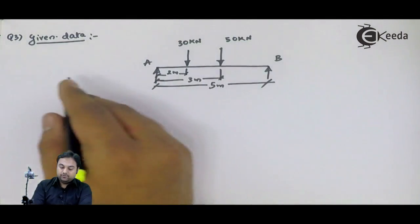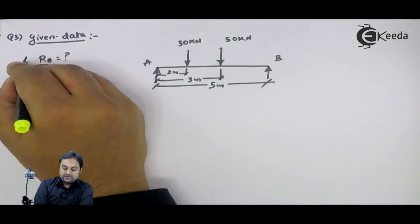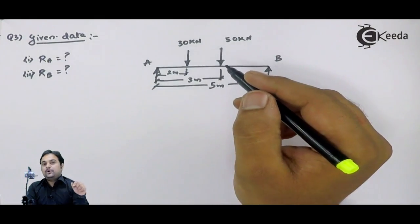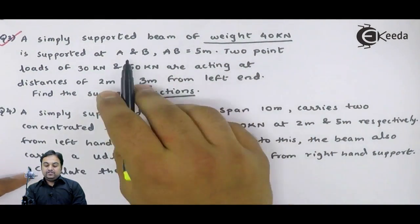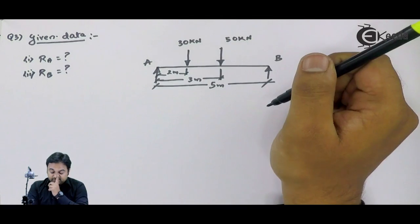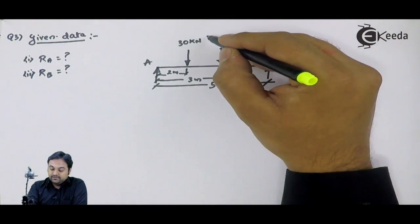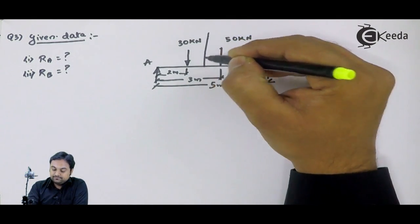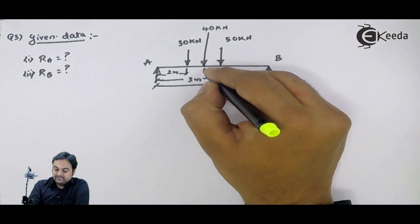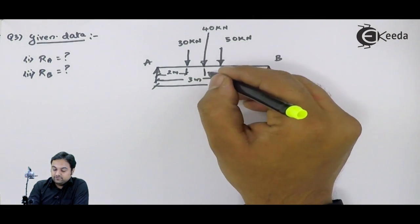We have to calculate the value of the reaction at point A and reaction at point B. Now, if we look at one different thing in this problem, it is said that the weight of the beam is 40 kN. If I consider the weight of this beam as 40, that weight would be acting at exactly half of this beam. If its entire span is 5 meters, then this 40 kN weight of the beam will be acting at exactly half, that is at 2.5 meters from A or 2.5 meters from B.